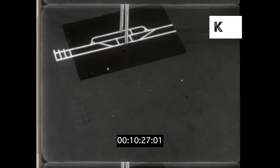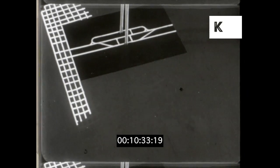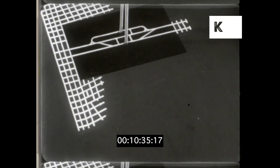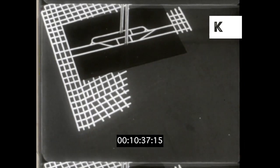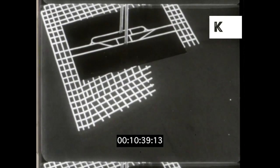This shows coal being won by a method known as board and pillar. This is only done in fairly shallow mines. Roads or boards are driven through the coal so as to leave pillars in between. These pillars act as a support to the earth above.